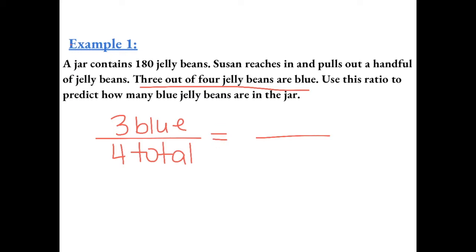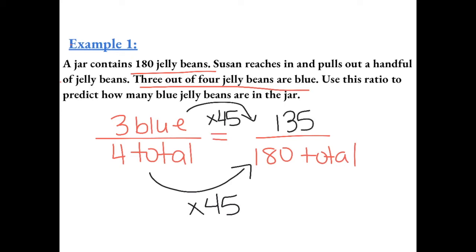So we could set this equal to 180 total jelly beans. From 4 total to 180 total, this is 45 times the total. So if we do the same thing to the number of blue, we multiply it by 45, we can predict there to be 135 blue jelly beans out of 180 total.